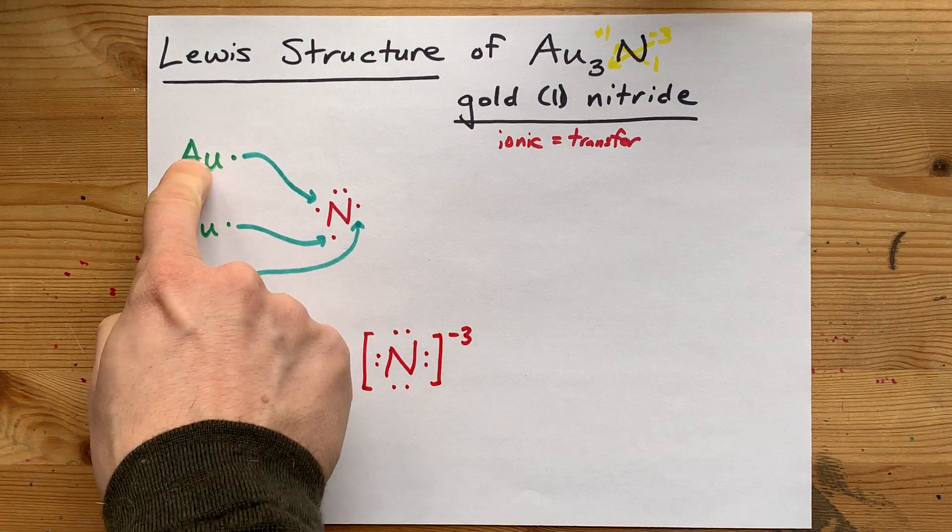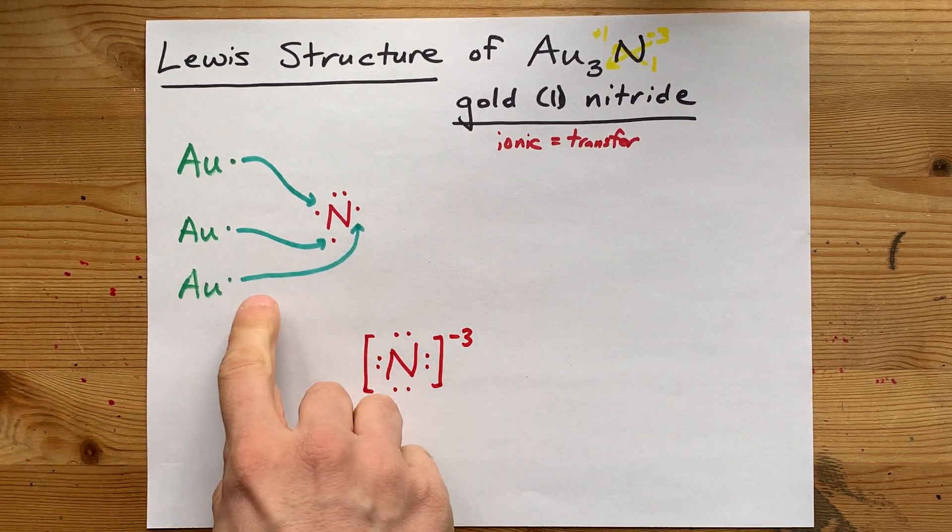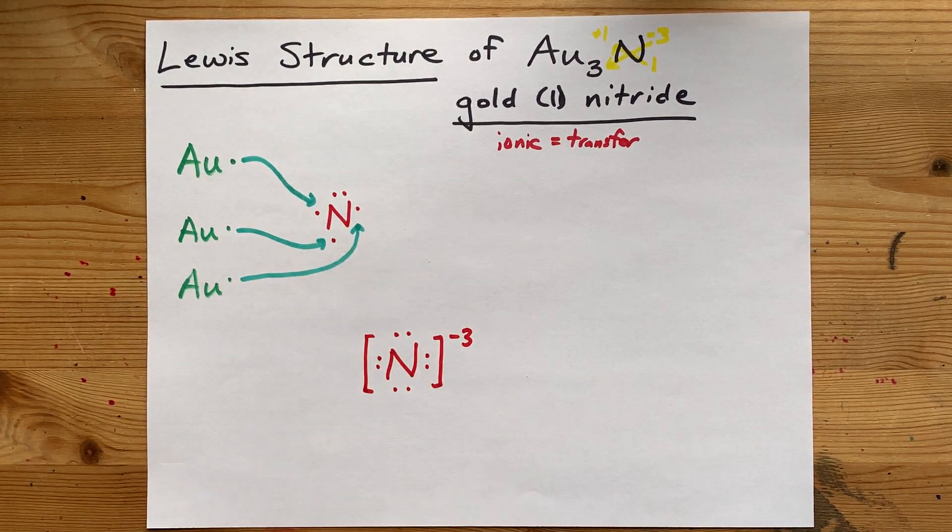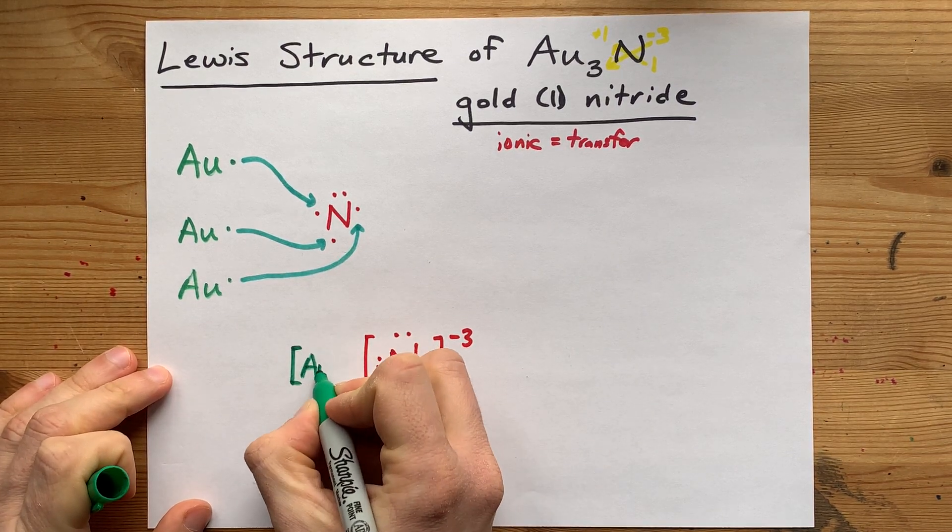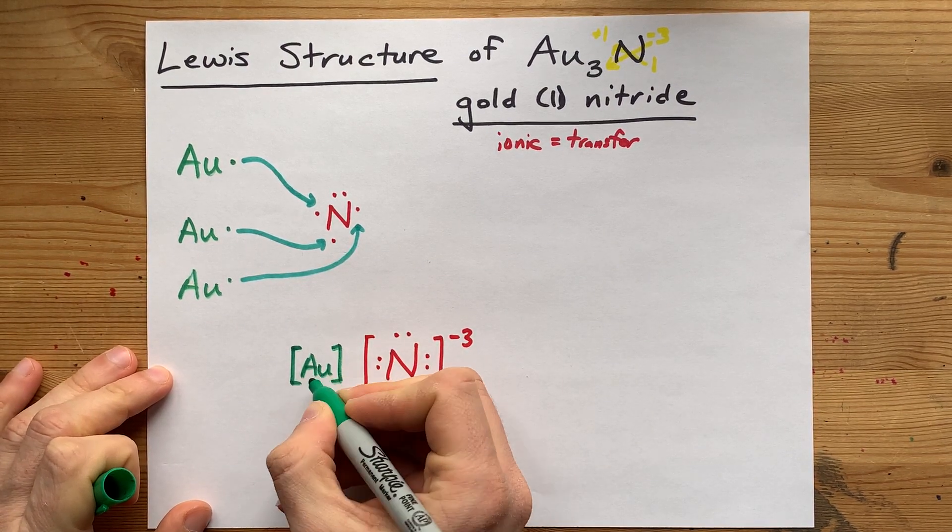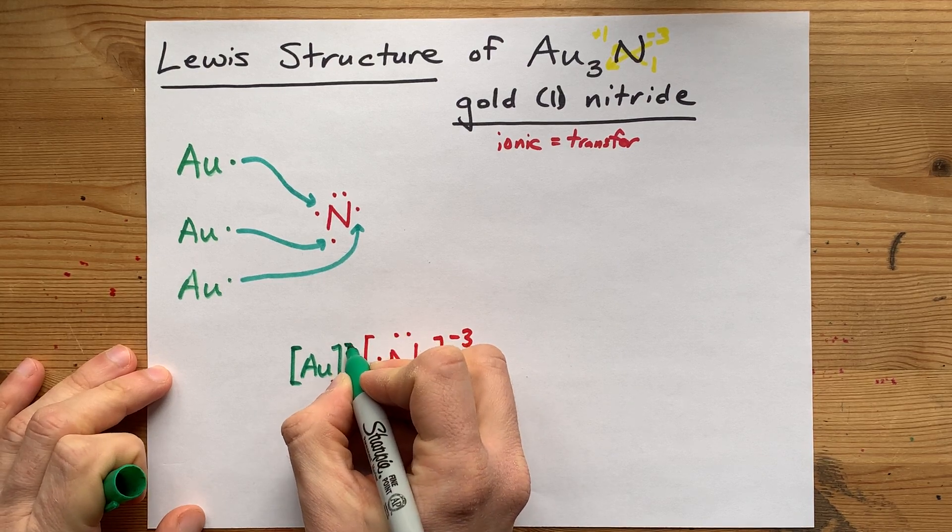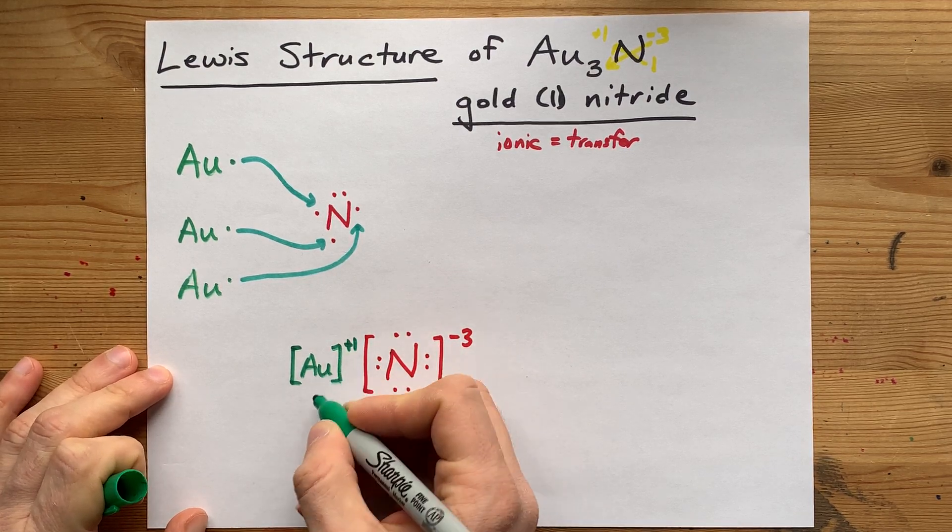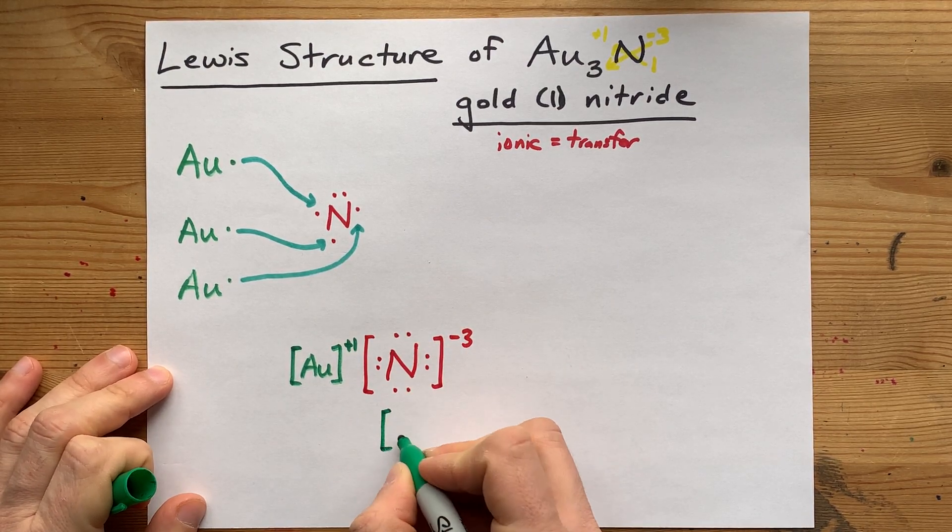And three gold atoms each having lost their one electron. So draw yourself the gold, but don't put any electrons around it. And give it a plus one charge because it lost one electron each.